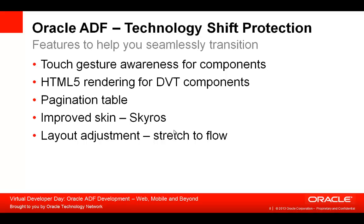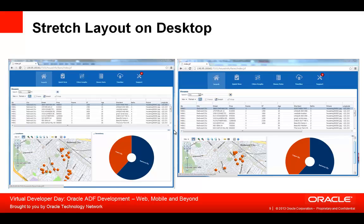Another type of adjustment that ADF Faces can do automatically for you is layout adjustment. While on desktop, the common layout used for pages was stretch-based layout; in tablets, flow layout is much more common. In a stretch layout, the page content stretches to fill the full area of the browser, and if you resize the browser to be shorter in height, ADF Faces automatically adds scroll bars to allow scrolling of hidden parts of the page — with scroll bars defined for specific areas, so specific islands of information get a scroll bar associated with them.